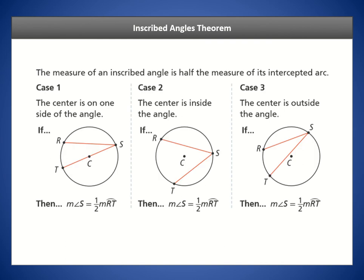The measure of an inscribed angle is half the measure of its intercepted arc. There are three cases depending on where the angle is in relation to the center: if the center is on the angle, that's case one; if it's inside or outside, those are cases two and three respectively. But the result is the same — if you know the intercepted arc, you always know the inscribed angle because it's always going to be half of that.